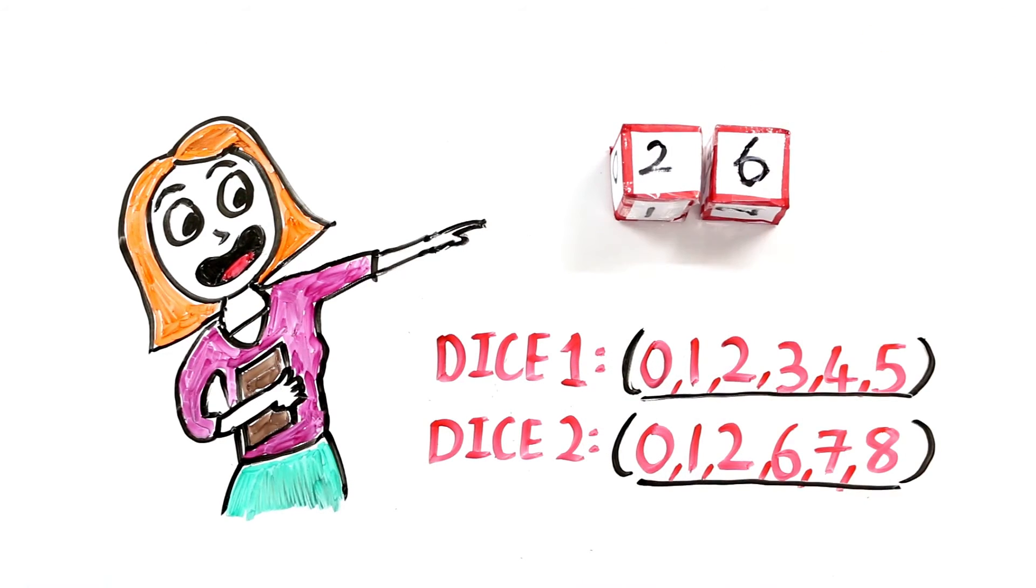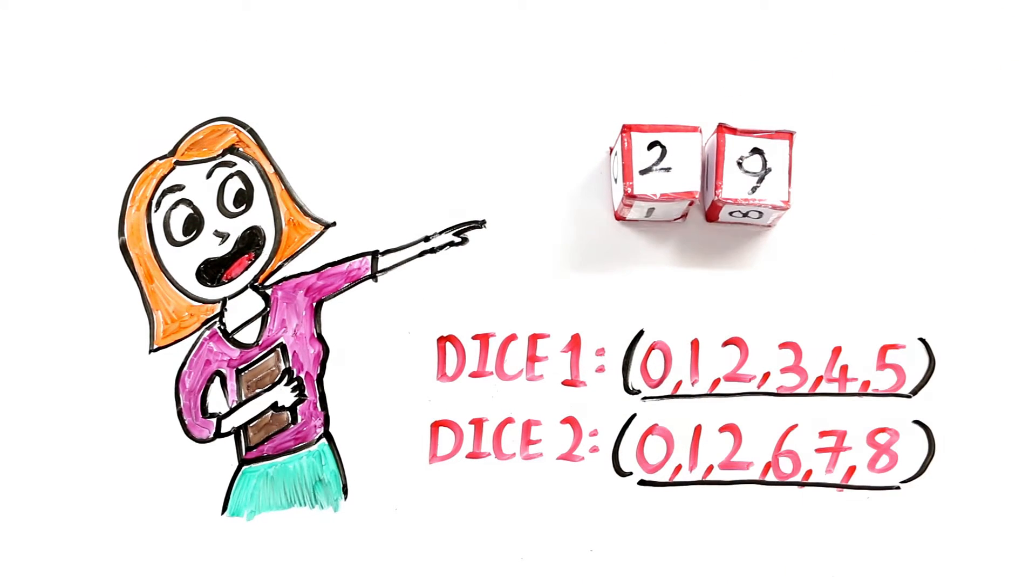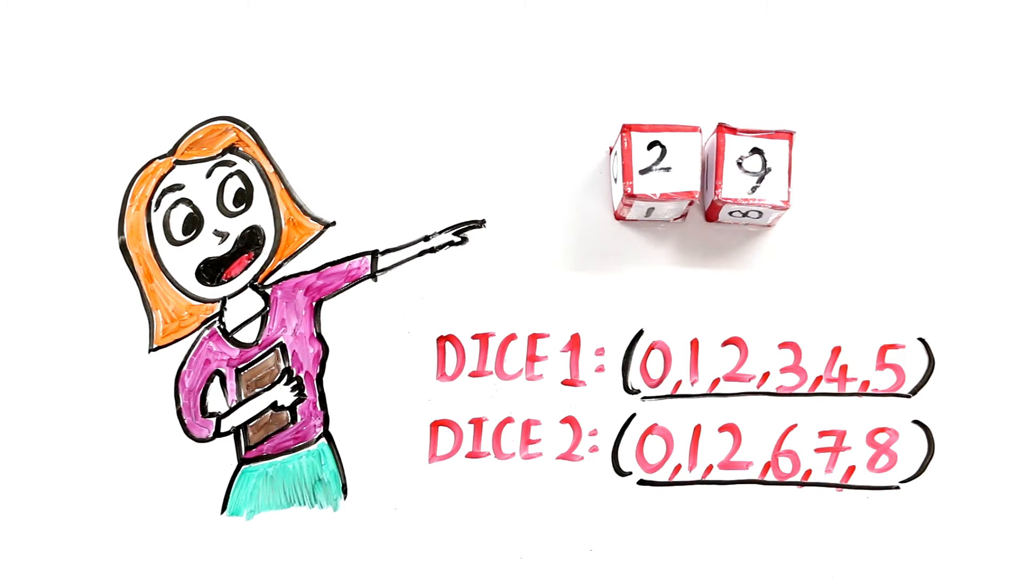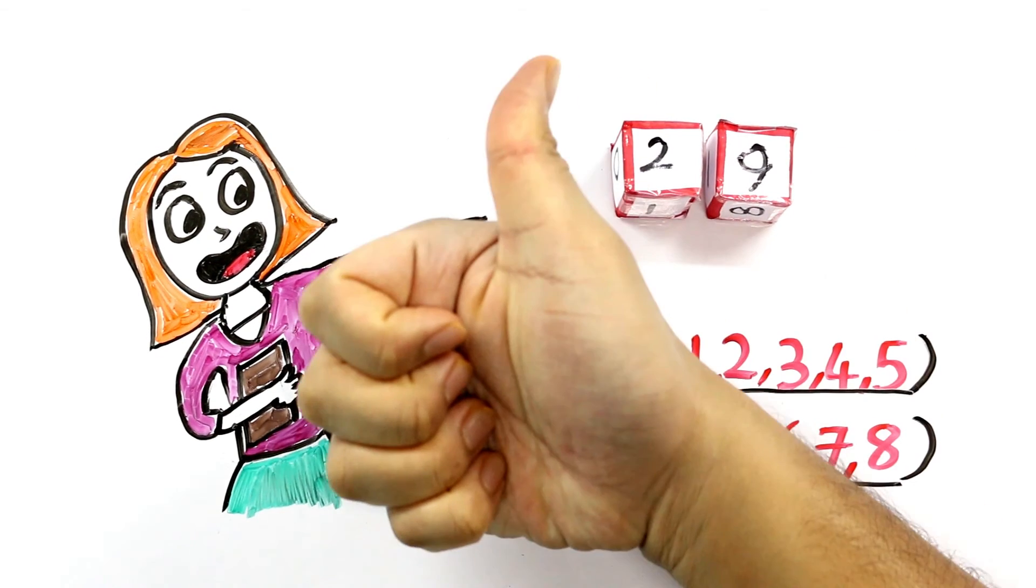But here's the catch. We can use 6 as 9 by inverting it. So this combination works best and can be used to show any date from 01 to 31. Hope you enjoyed the video.